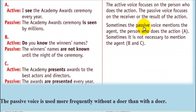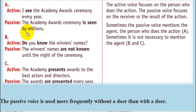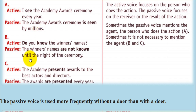Sometimes the passive voice mentions the agent — the doer of the action, the person who does the action. For example, 'by millions.' When you say 'the Academy Awards ceremony is seen by millions,' you can mention the doer of the action using 'by.'